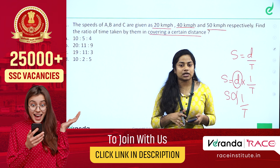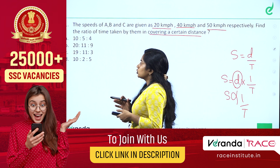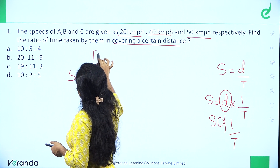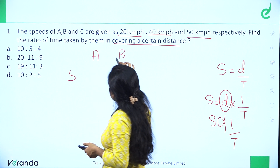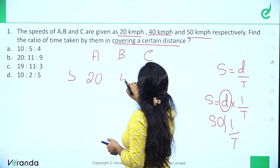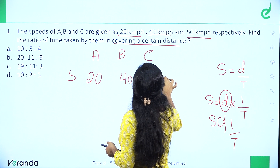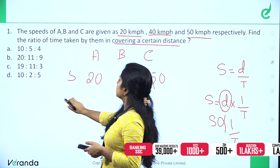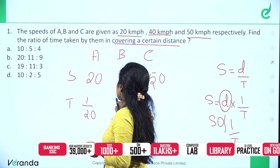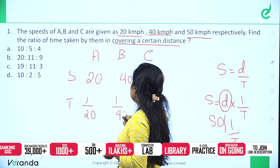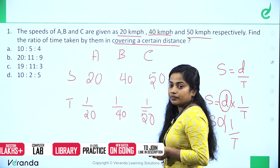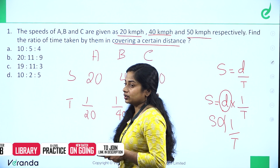The speed ratio of A, B, C is 20 : 40 : 50. Since time is inversely proportional to speed when distance is constant, the time ratio is 1/20 : 1/40 : 1/50. This is not in whole numbers, so we need to convert it.